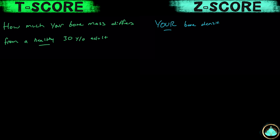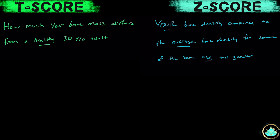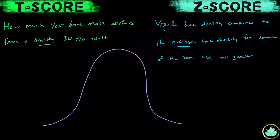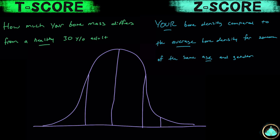A Z-score compares your bone density to the average bone density of people your own age and gender. Both of these scores are represented as averages and, if any of you remember from the horrors of high school math, anything given as an average is distributed over a bell-shaped curve. The numbers of the T and Z-scores represent standard deviations. If you're completely lost, pay no attention to the last 20 seconds because I'm going to give you the ranges and exactly what they mean.